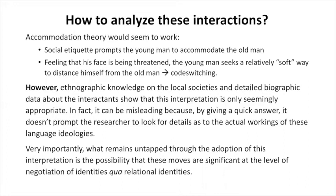So how should we analyze these interactions? Accommodation theory would seem to work, right? Social etiquette prompts the young man to accommodate the old man, and feeling that his face is being threatened, the young man seeks a relatively soft way to distance himself through code switching. However, ethnographic knowledge on the local societies and detailed biographic data about the interactants show that this interpretation is only seemingly appropriate. In fact, it can be misleading, because by giving a quick answer it doesn't prompt the researcher to look for details as to the actual workings of these language ideologies. Very importantly, what remains untapped is the possibility that these moves are significant at the level of negotiation of identities qua relational identities.